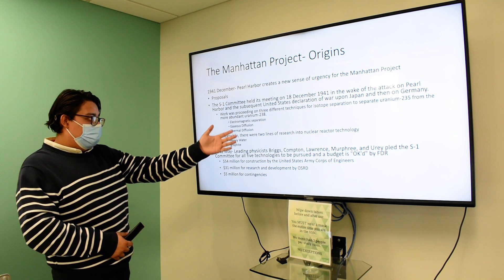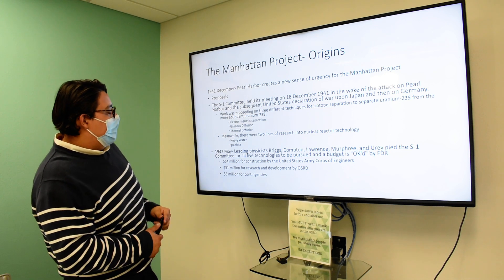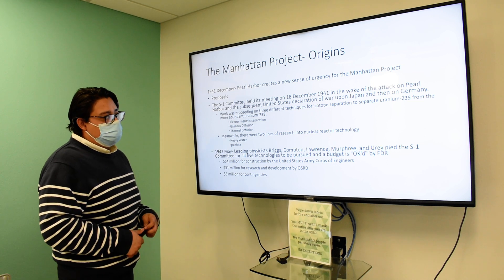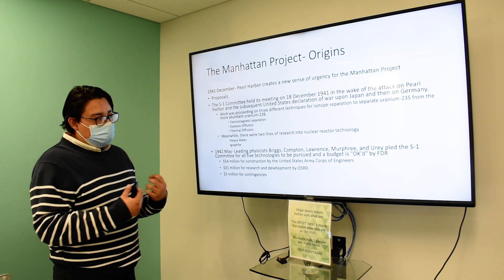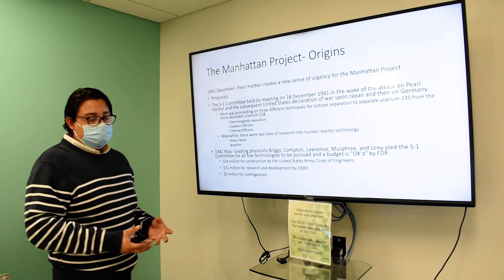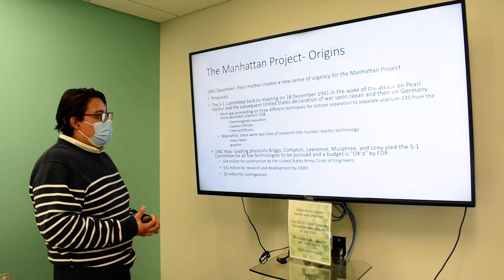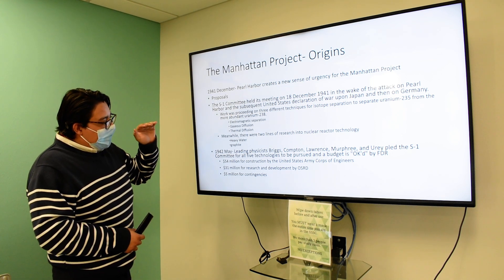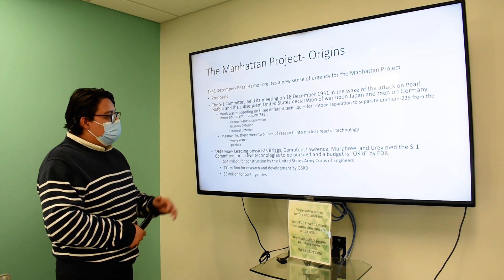The techniques being explored involve Uranium-235. The challenge is that U-235 comes from Uranium-238 and needs to be separated from it, which is very hard. On top of that, it's a very scarce resource on Earth. The methods being investigated are electromagnetic separation, gaseous diffusion, and thermal diffusion to separate the uranium. Heavy water and graphite are going to be used to run the nuclear reactors.